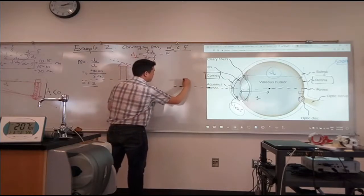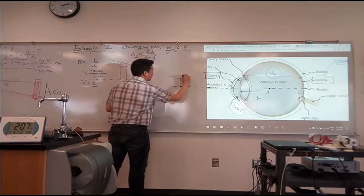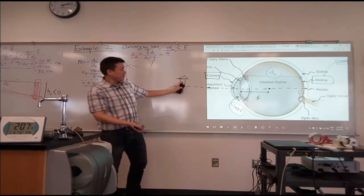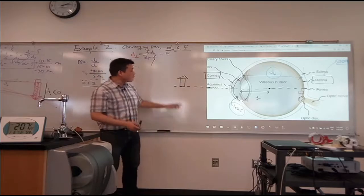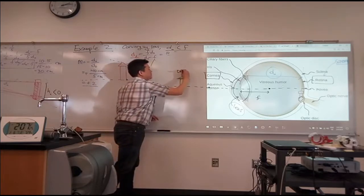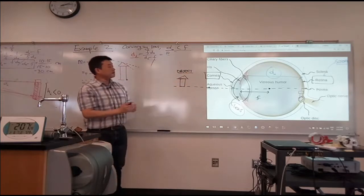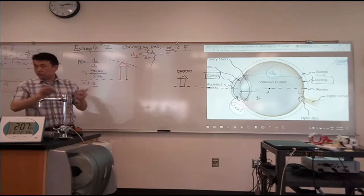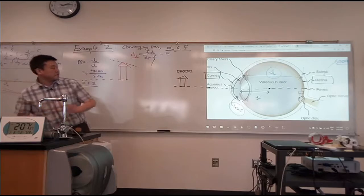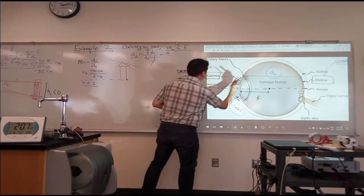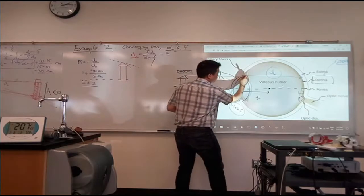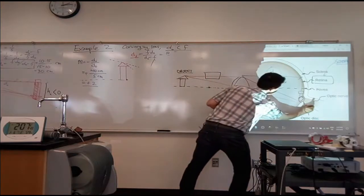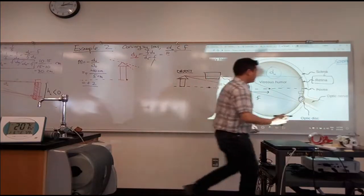Let's say I have an object here — this is a configuration I know will form an image there. When you look at this object, this is what happens to the light coming from it — you can do the ray tracing. The light going in parallel bends in such a way that it goes through the focal point; light that goes through the middle doesn't bend, goes straight. And it forms an image somewhere here.